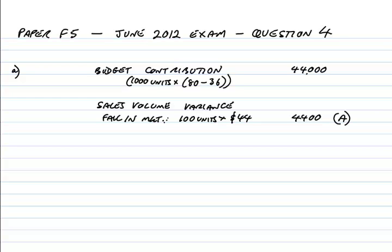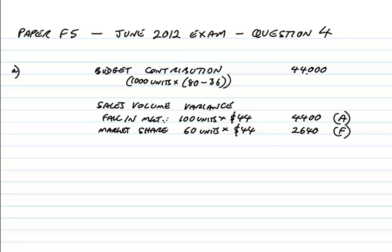That would have brought us down to 900 units, but we actually sold 960, so we gained 60 units — that must mean we've had a gain in market share. At $44 standard contribution per unit, that would have gained us 2,640 — favourable. So we've lost as a result of the market falling but we've gained on market share. That means at that stage we'd be expecting a contribution of 42,240.